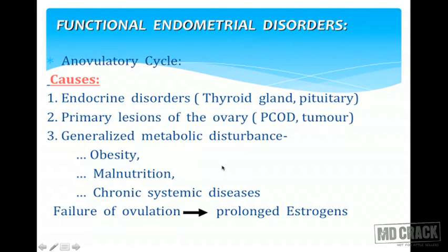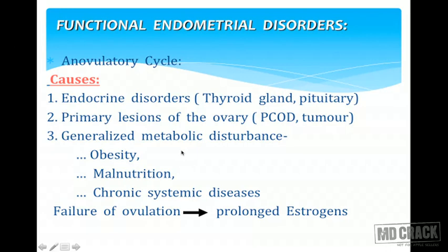Important causes for dysfunctional uterine bleeding include endocrine disorders such as thyroid conditions like hyperthyroidism and hypothyroidism, and pituitary adenomas which are functional and can cause uterine bleeding. Primary ovarian lesions, most importantly polycystic ovarian disease, cause a hyperestrogenic status leading to uterine bleeding. Estrogen-secreting tumors like granulosa cell tumors, generalized metabolic disturbances like obesity and malnutrition, and failure of ovulation resulting in excessive estrogen effect on the endometrium are also important causes.